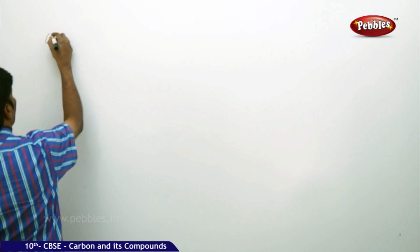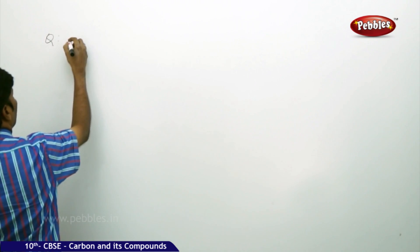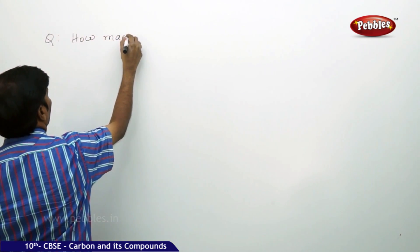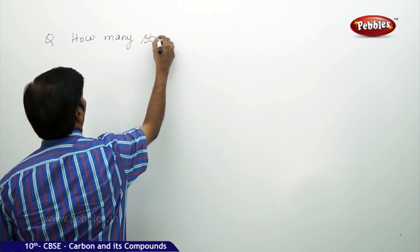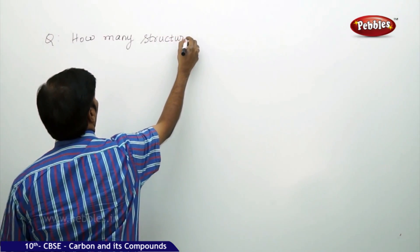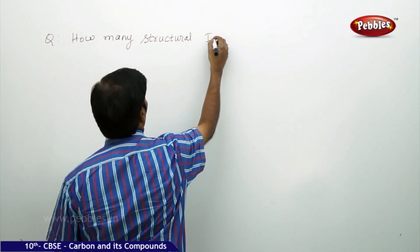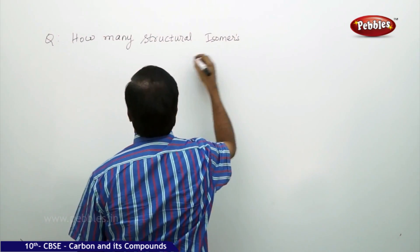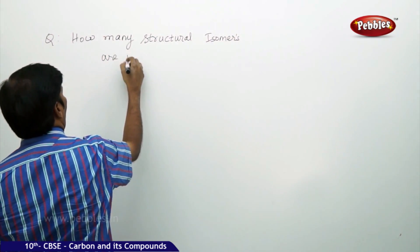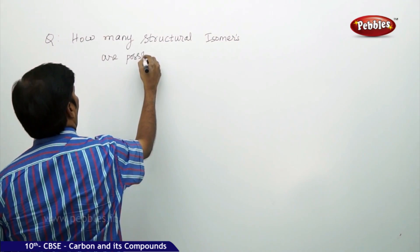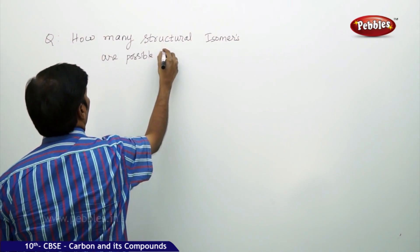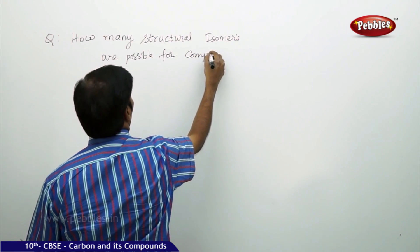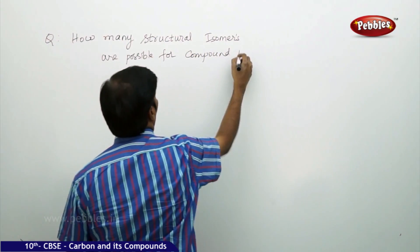The question is: how many structural isomers are possible for the compound pentane?